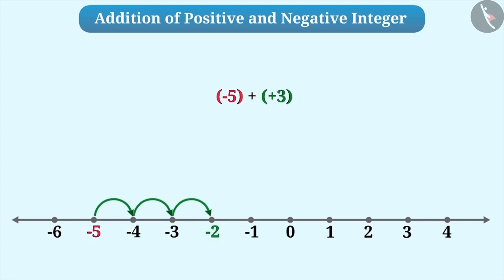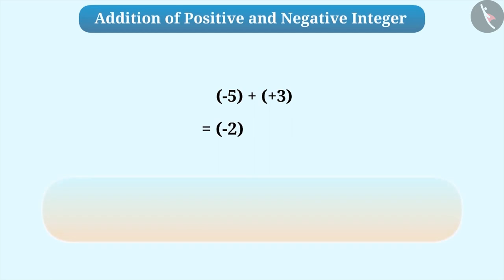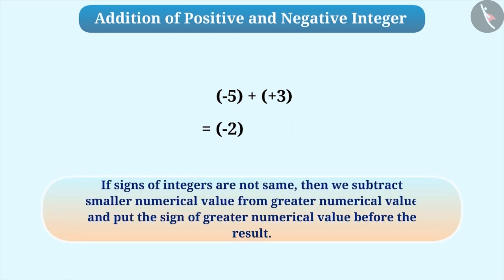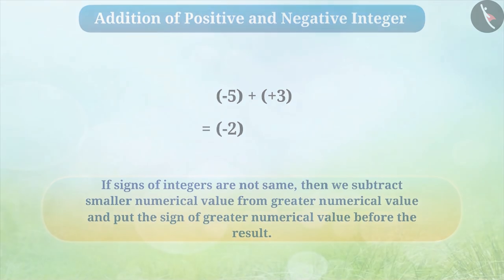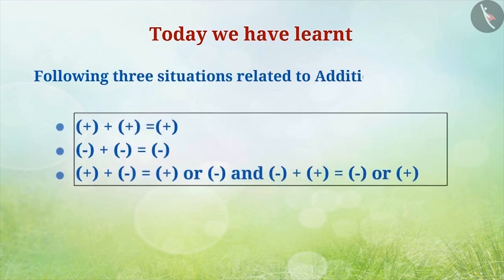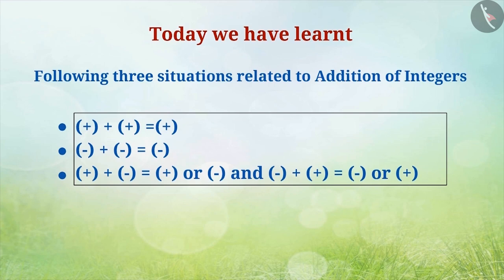Now you must have understood that if the signs of integers are not the same, then we will subtract the smaller numerical value from the greater numerical value and then put the sign of the greater numerical value before the result. Today, we have learnt about the following three situations related to addition of integers. In the next video, we will learn it better with some examples.